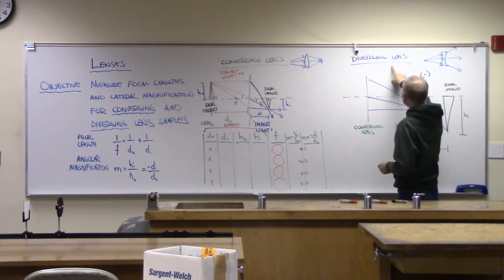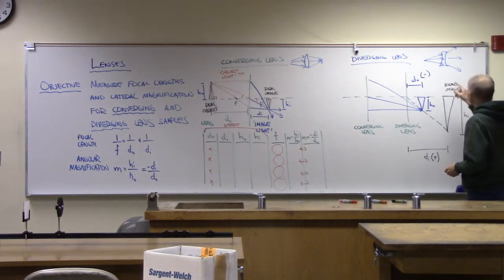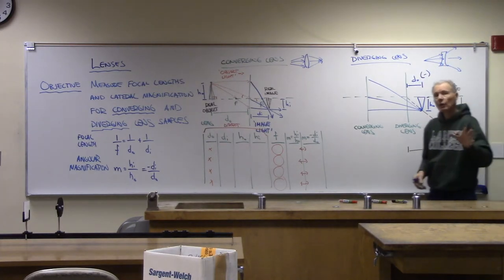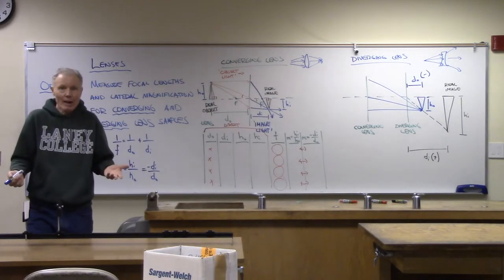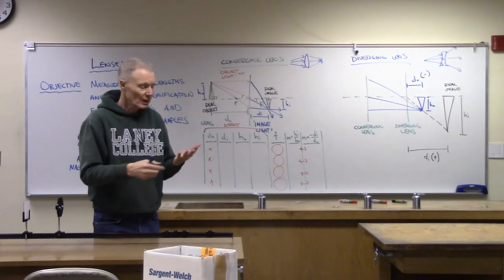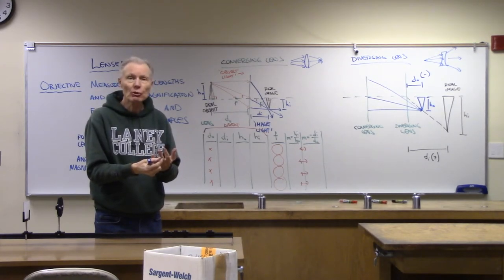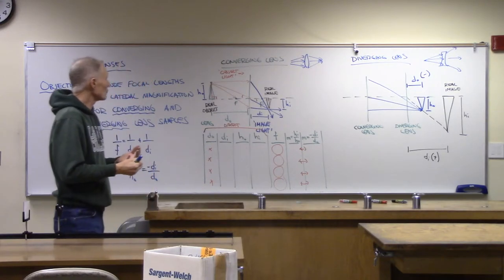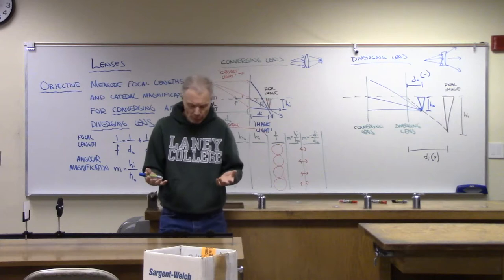There are two converging lens samples, giving two data sets. For the diverging lens, measuring it is harder — with a diverging lens alone you can't start with a real object and get a real image. So we have to use multiple lenses: we add a converging lens. We can put them in either order; the setup we're using today starts with the object passing through a converging lens first.